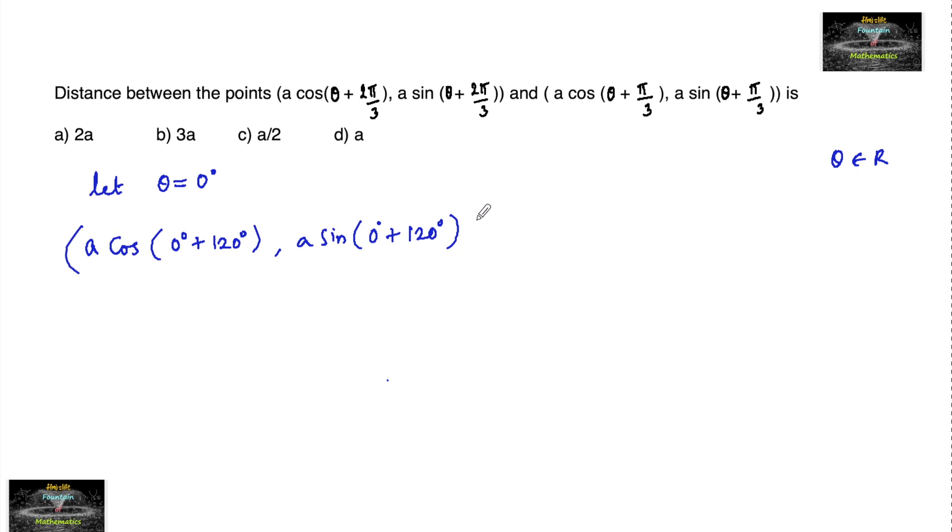Another point B is a cos(0° + 60°), a sin(0° + 60°).